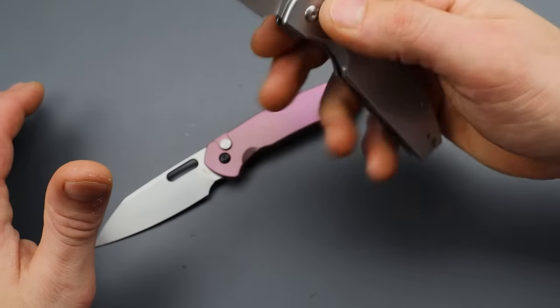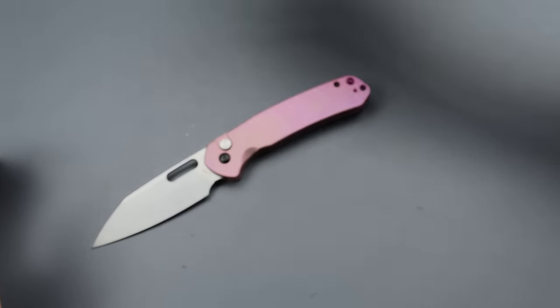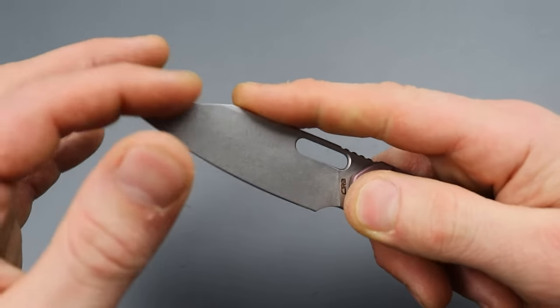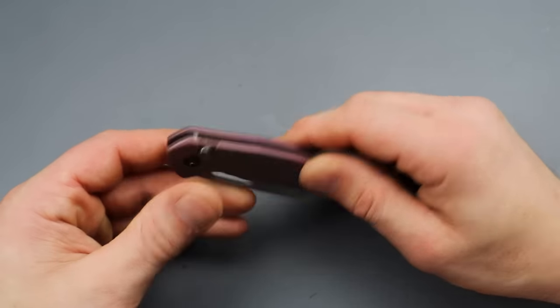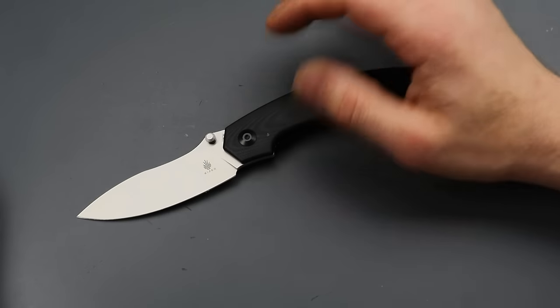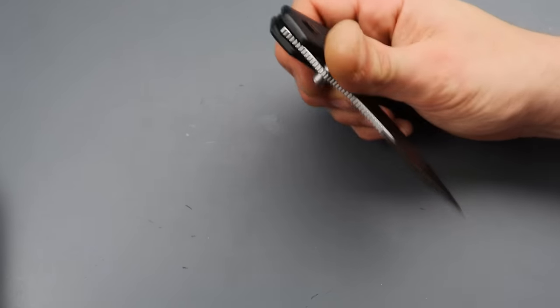And then, same thing with this one, man. This one's just got such a useful blade shape. Now, there is other versions of this. You can get thumb stud versions, drop point versions. This one's the sheep's foot with the hole. So, next is the Kaiser Doberman. And I love this knife for a few reasons.